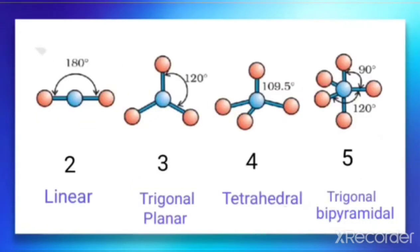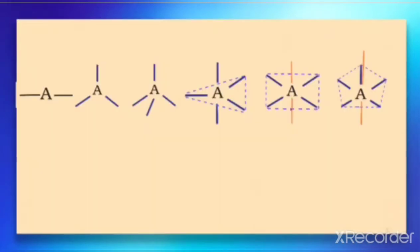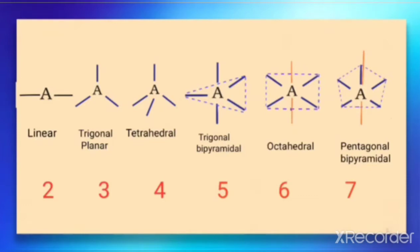For our convenience, the structures are summarized as: linear (number 2), trigonal planar (number 3), tetrahedral (number 4), trigonal bipyramidal (number 5), octahedral (number 6), and pentagonal bipyramidal (number 7).